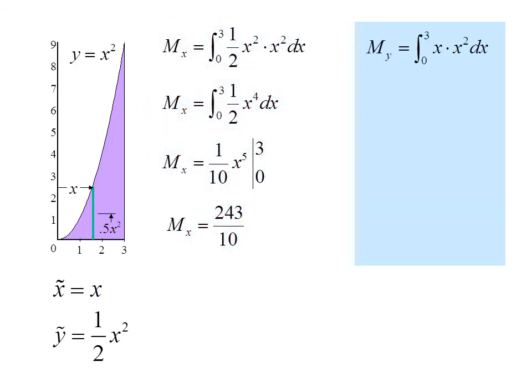The moment about the y-axis is the integral from 0 to 3 of x times x² dx. In this case, x is the distance to the centroid, and once again, x² dx is the area of the strip. So I simplify, find the antiderivative, and I substitute in the 3 to get 81 fourths.